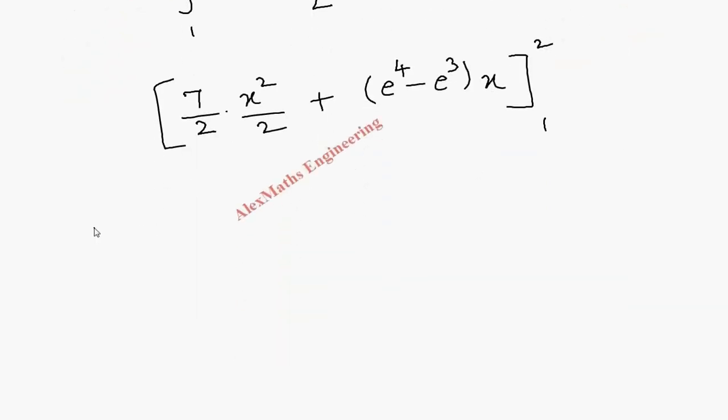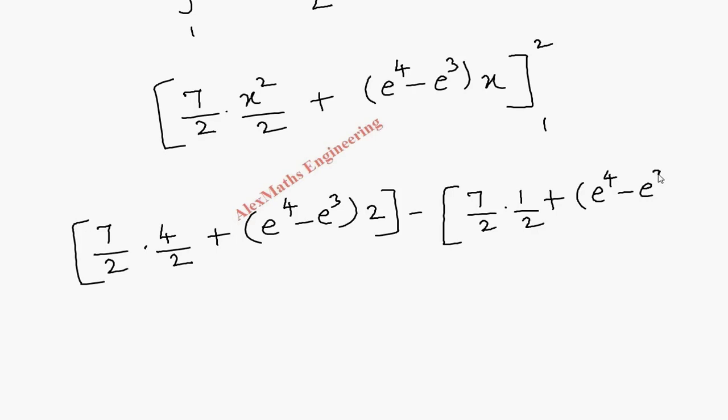First let's substitute the upper limit. So 7 by 2 into 2 square is 4, 4 by 2 plus e power 4 minus e power 3 into 2 upper limit. Then we have to substitute the lower limit. That will become 7 by 2 into 1 by 2 plus e power 4 minus e power 3.